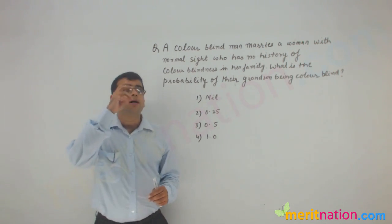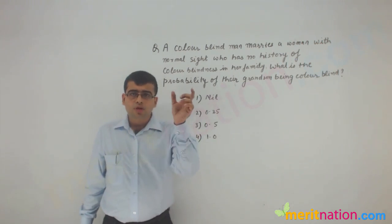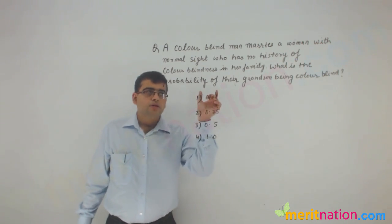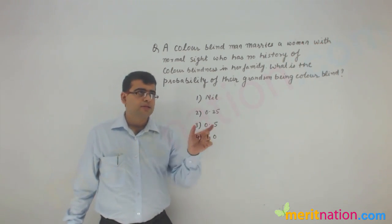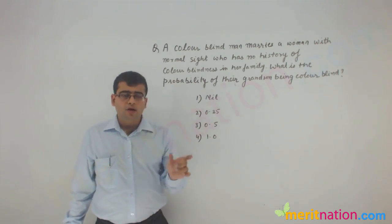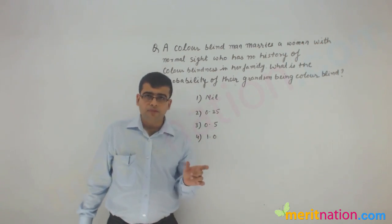The question says, a colorblind man marries a woman with normal sight who has no history of colorblindness in the family. What is the probability of their grandson being colorblind?